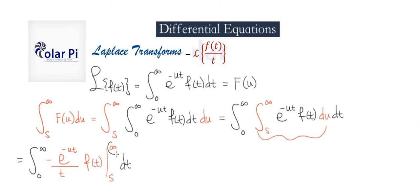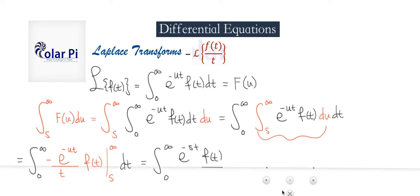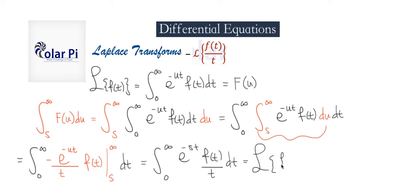Since f of t is constant, plugging in infinity gives zero. When we plug in s, there's a minus from the evaluation theorem, but there's a minus here too, so it's plus. What we get is the integral from zero to infinity of e to the minus st times f of t divided by t, dt. This, by definition, is the Laplace transform for f of t over t.